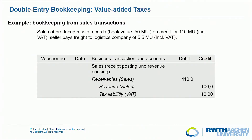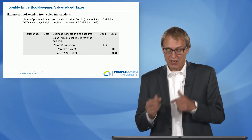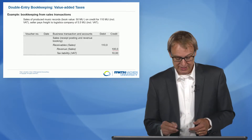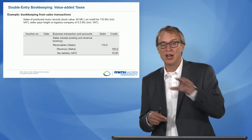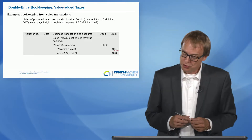We now look at the revenue and expense book records, and then finally we have to pay the tax authority. For the revenue book record: we sell our music records for 110 euros, but only 100 euros are revenues because 10 euros is the value-added tax I owe to the tax authority.